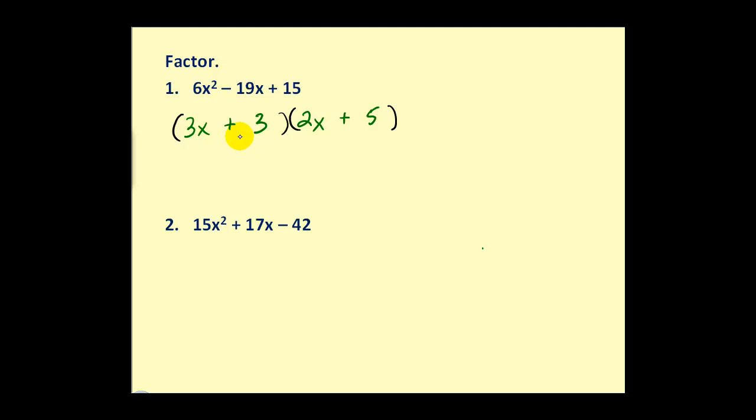Right away, I'm concerned because we're never going to have common factors in a binomial if there weren't any common factors in the original trinomial. But let's test it. Check the inner product and the outer product and see if the sum is the middle term of -19x. We have 21x, so those are the wrong factors.